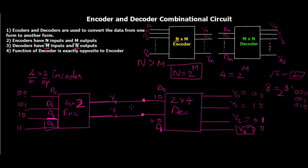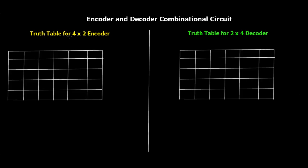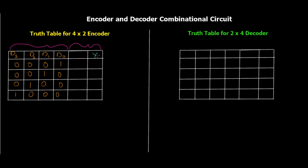Let's write the truth table for the 4x2 encoder. The four input columns are D0, D1, D2, D3, and the two output columns are Y0 and Y1. At a time only one input line is high. When D0 is 1 the output is 00; when D1 is 1 the output is 01; when D2 is 1 the output is 10; when D3 is 1 the output is 11. This is how each input line is mapped to a unique output code.